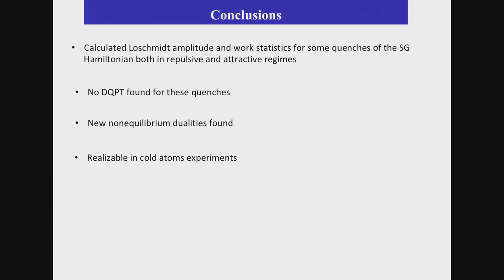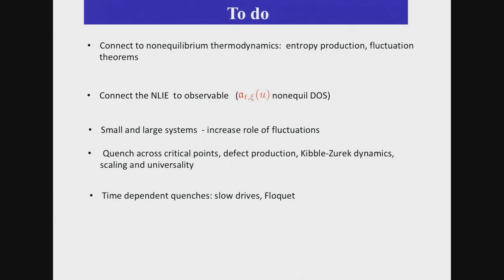What I showed is how to calculate the Loschmidt echo and work statistics for some quenches. I didn't discuss it, but for this particular initial state, we showed that there is no dynamical phase transition. We didn't have time to show that either new non-equilibrium dualities occur between strong and weak interactions, and one can realize this quench in experiment. Many things to do,